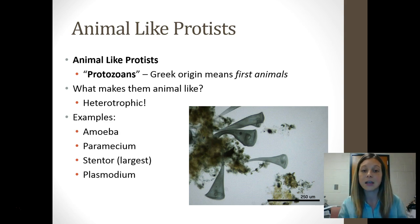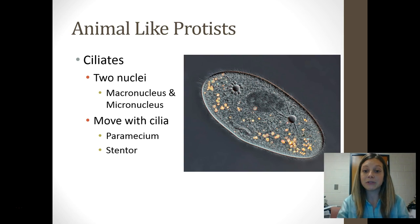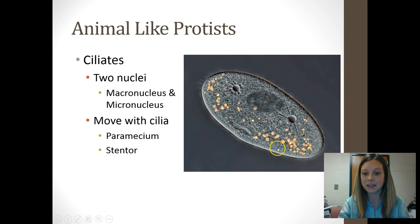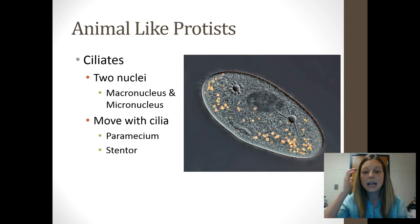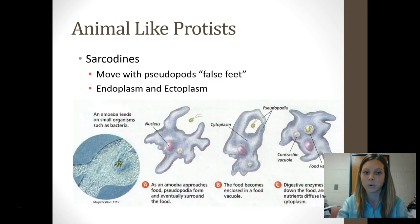Some examples of animal-like protists are amoeba, paramecium, stentor, and plasmodium. One group of animal-like protists are called ciliates — like the paramecium we observed in class. They have cilia, these little hair-like projections all around the cell, and they move those hairs to propel the cell. They also have two nuclei: a macronucleus and a micronucleus. You can also see star-like structures called contractile vacuoles that help them remove excess water.